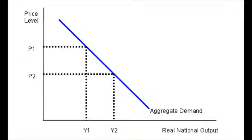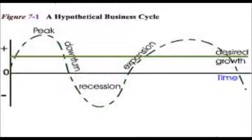A business cycle is a modern industrial economy that experiences a cycle of good times, then bad times, then good times again. The four main phases of a business cycle are expansion, peak, contraction, and trough.